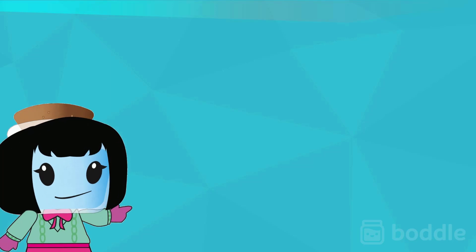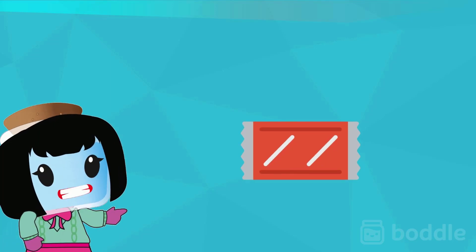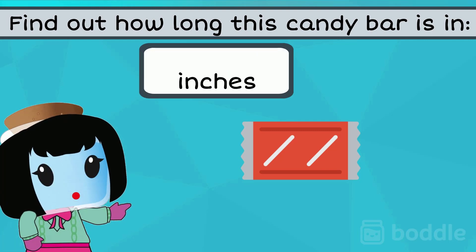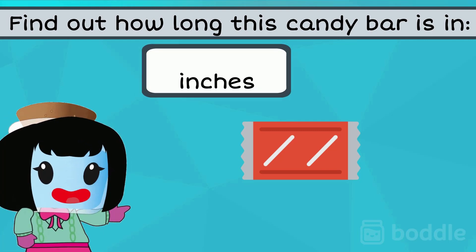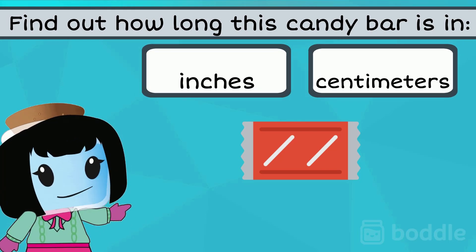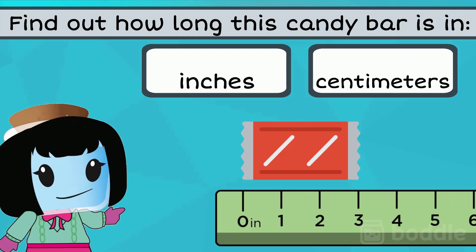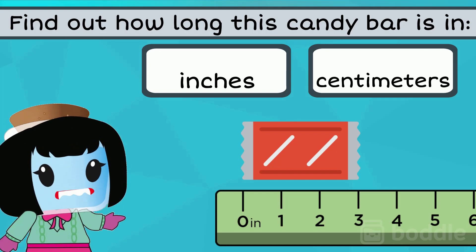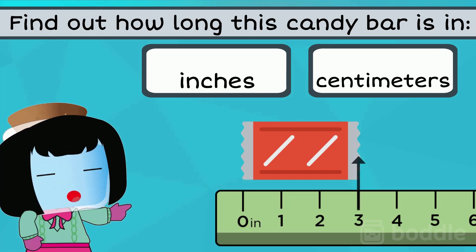Now let's try measuring the length of this candy bar. We're going to measure it twice. Once in inches and then in centimeters. Look at the inch ruler. About how many inches long is it? Yes, it is about three inches long.